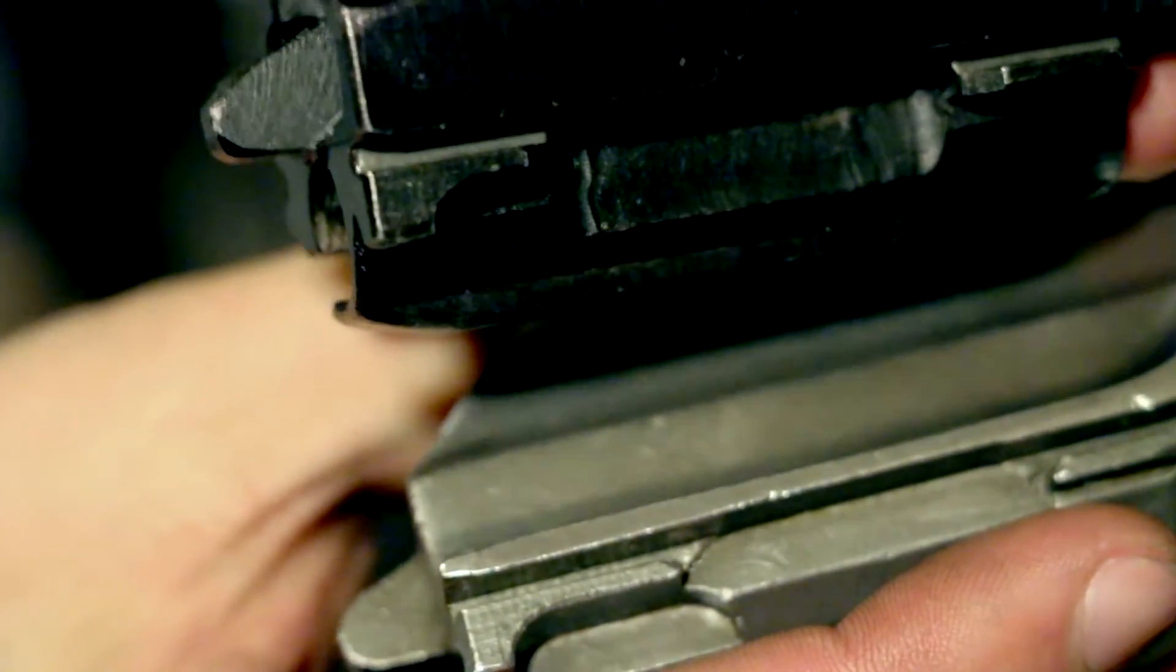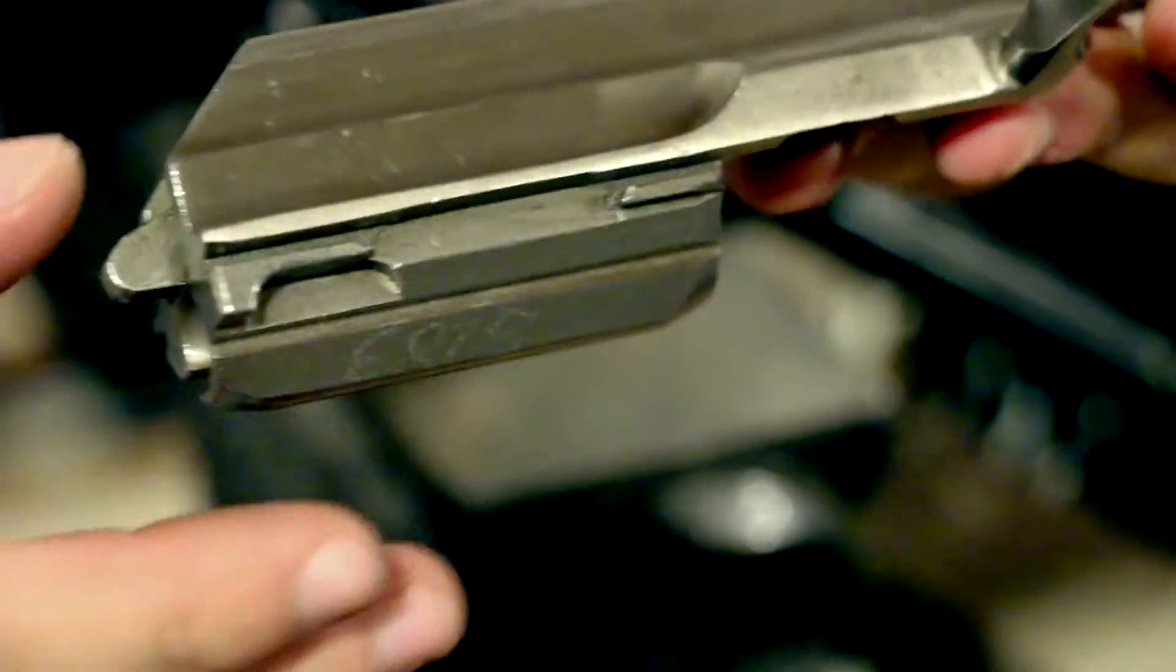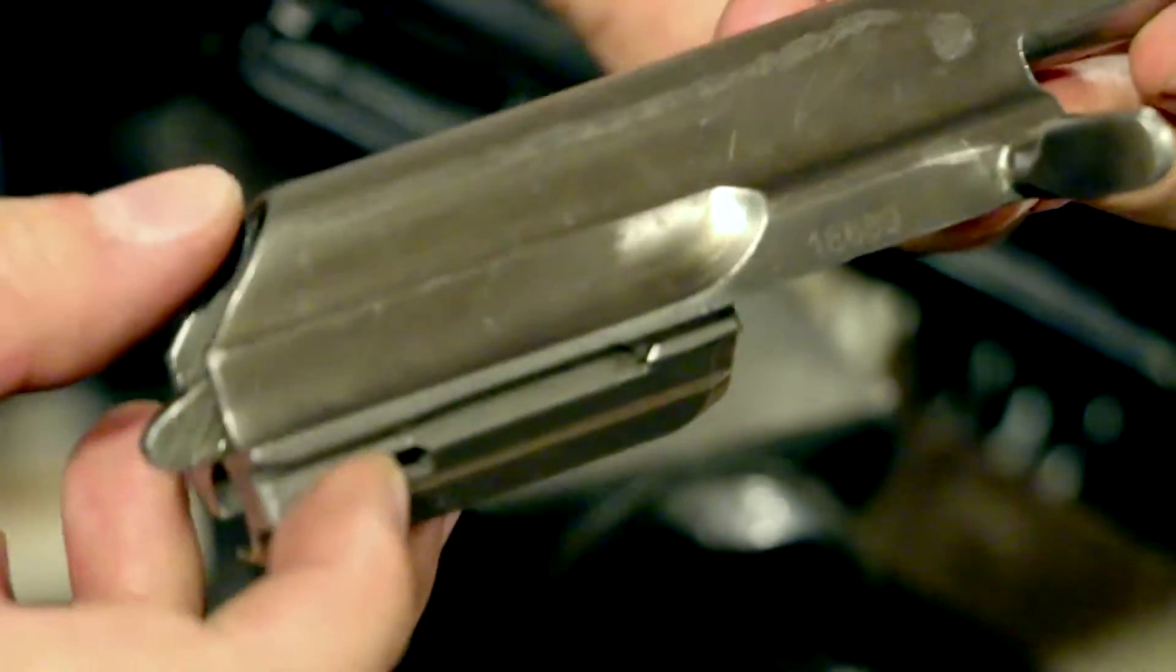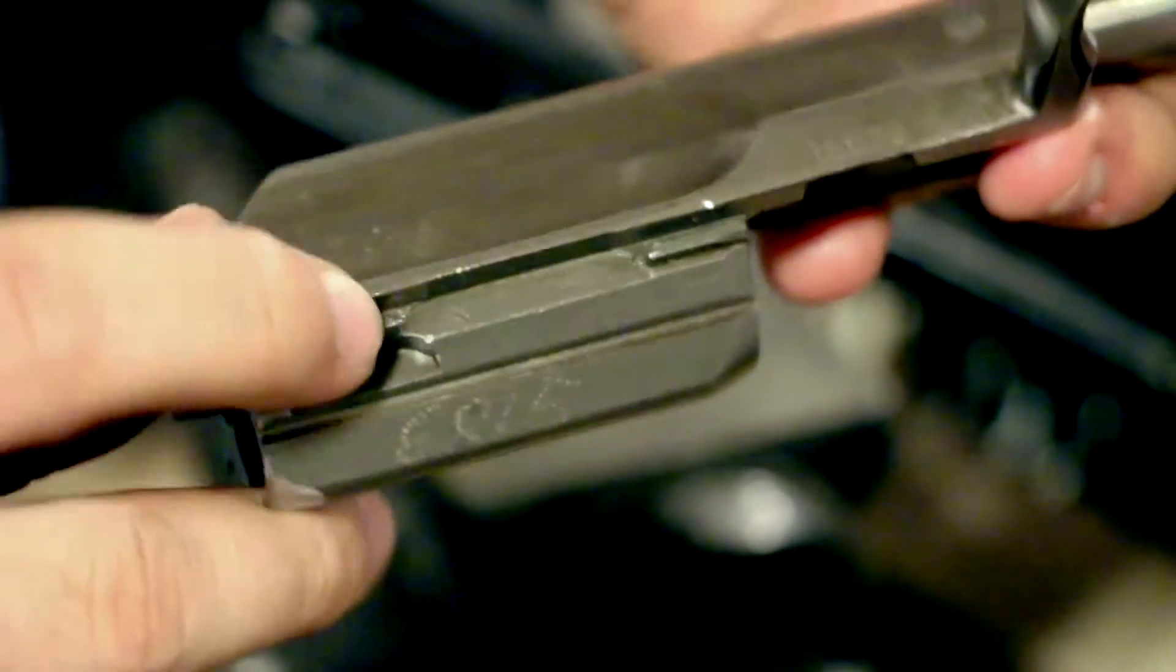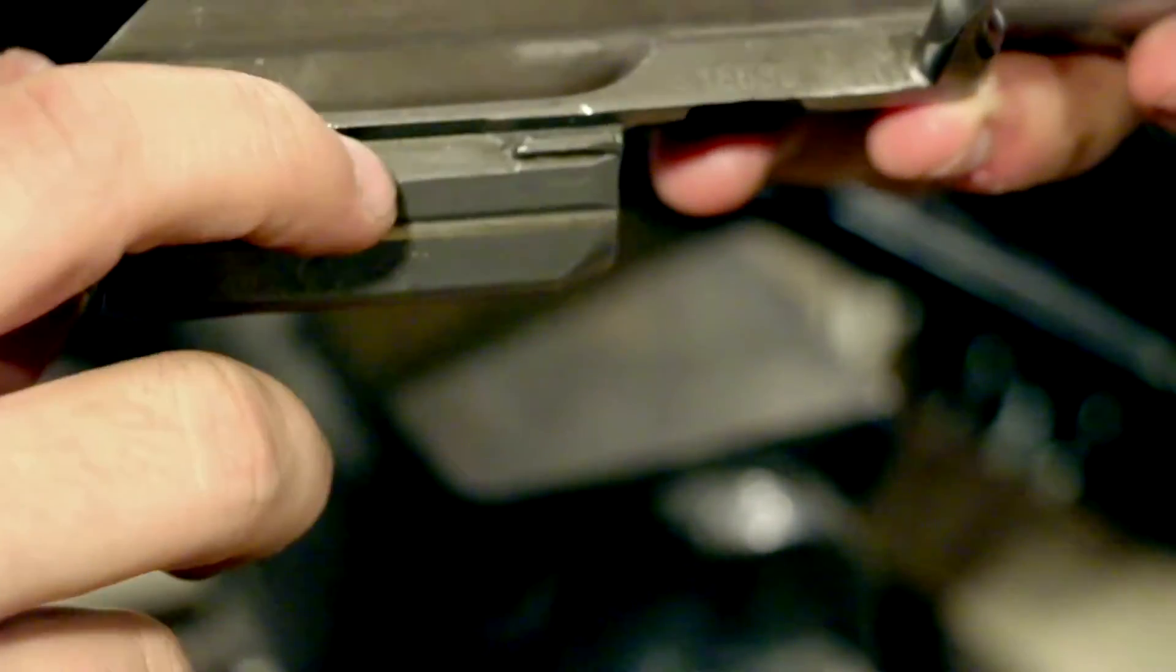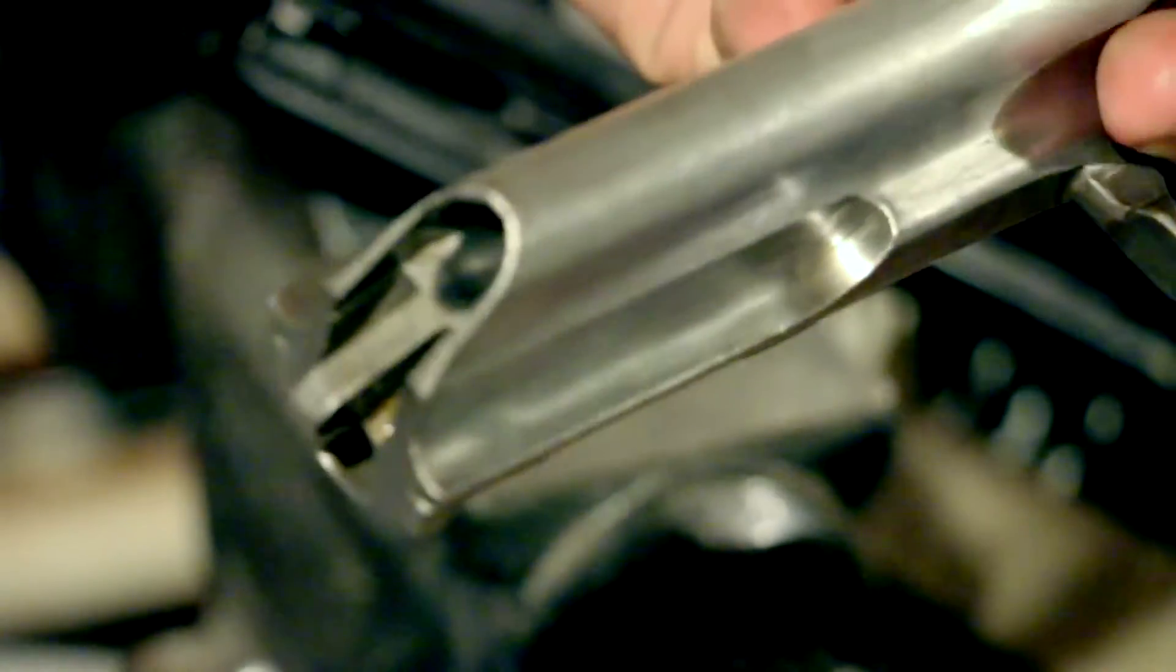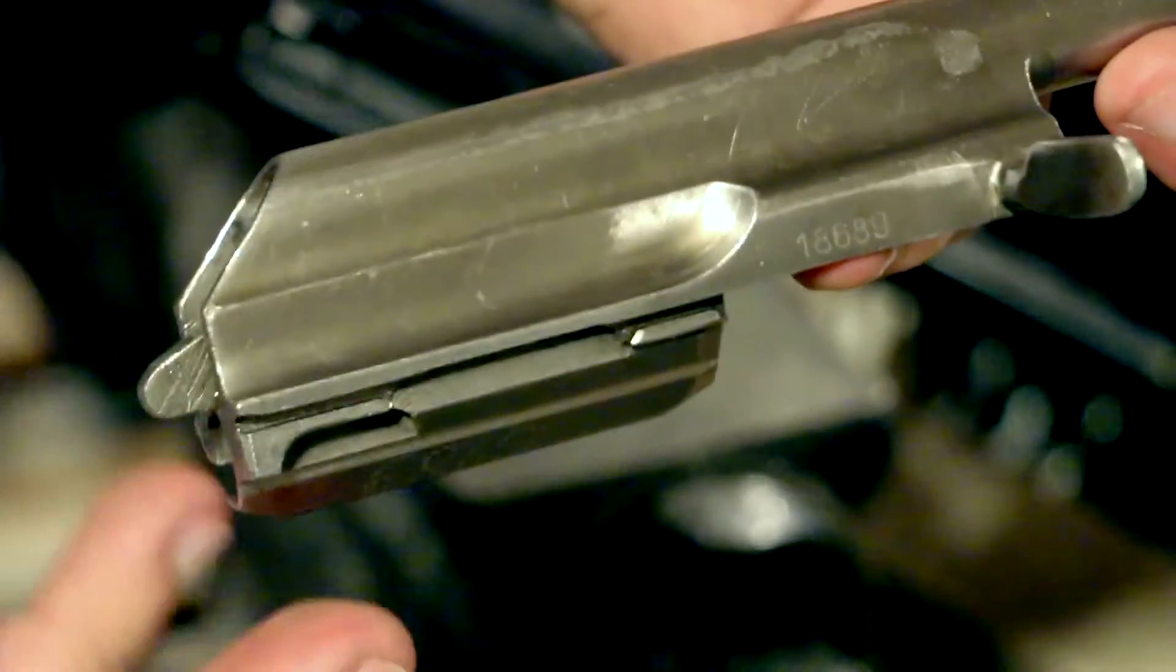This carrier isn't able to fit into the receiver at all to even try it because of this. Now I could very easily just cut this off and blend it to the carrier body on this portion, same on that side, and then it should work fine. Or I could open the receiver rails up to accept this.